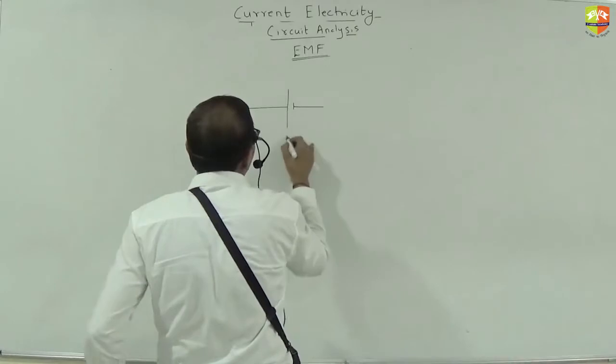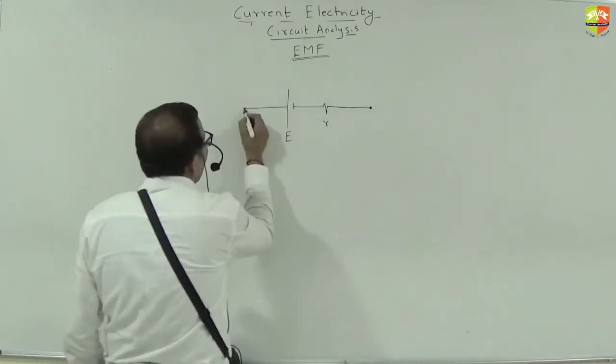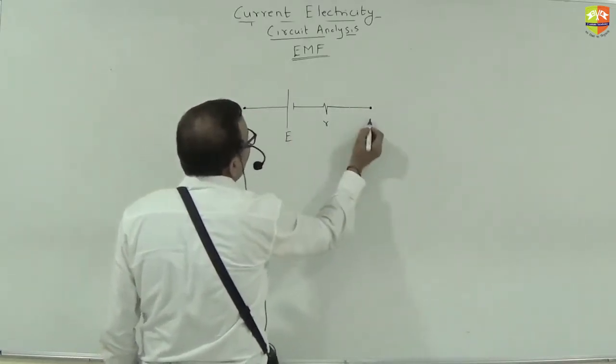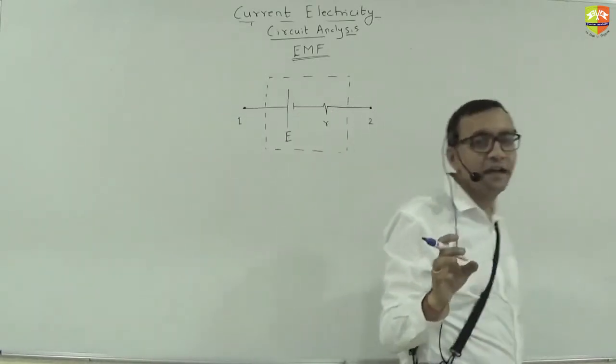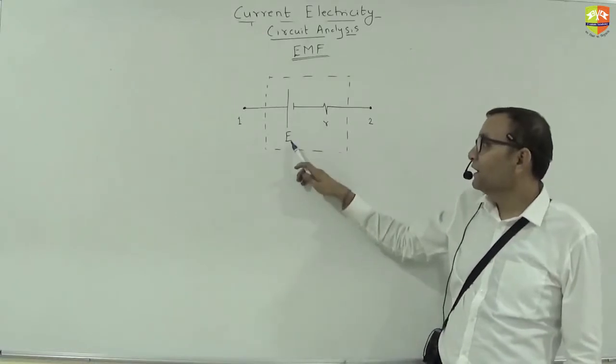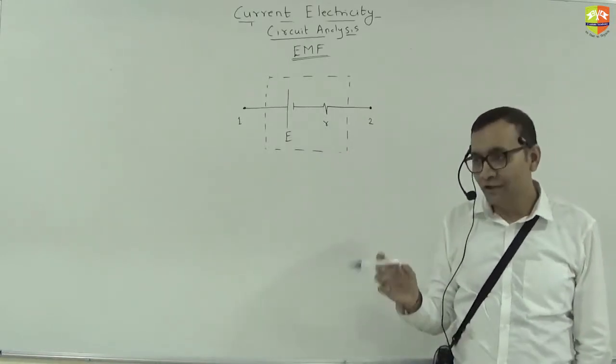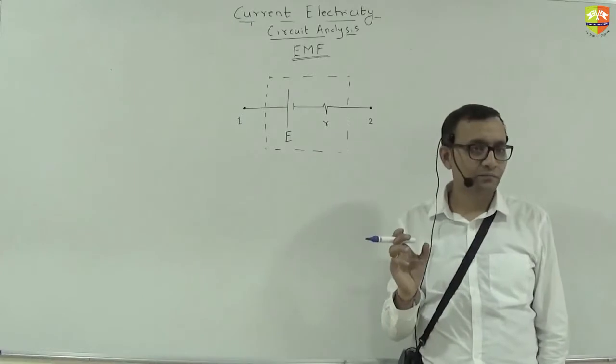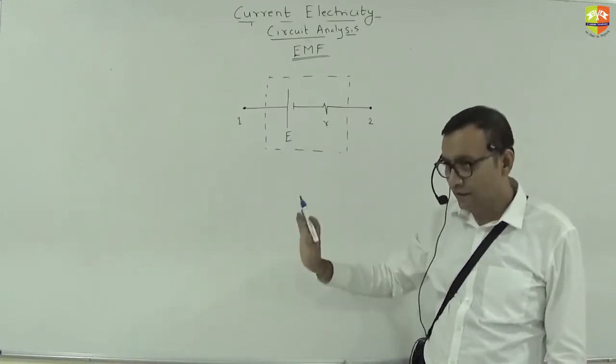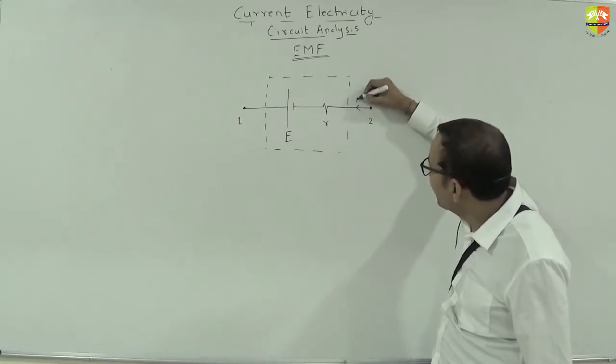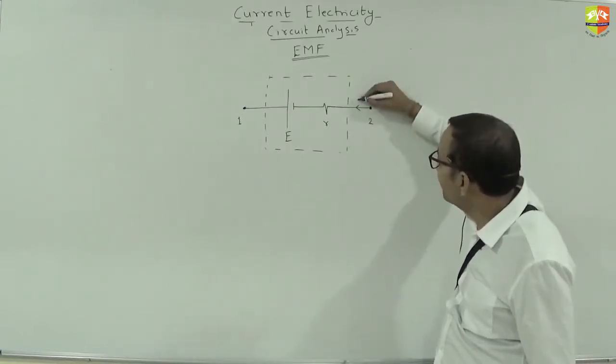Suppose you have a battery with EMF E and internal resistance R. Like this. You have this point number one and point number two. And this dotted line means that everything is inside one unit. So you have inside this EMF and resistance. Just in a circuit, you are showing that these are two different things, but actually it is one battery itself. Just for the analysis sake, we are separating internal resistance from the EMF. Now, suppose current is flowing as I.